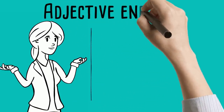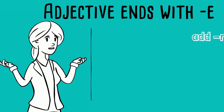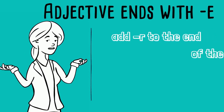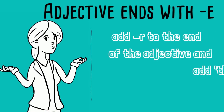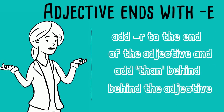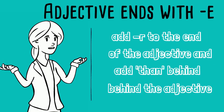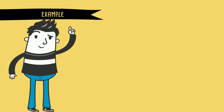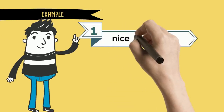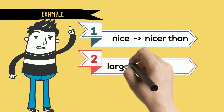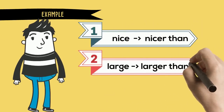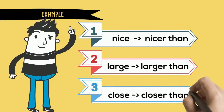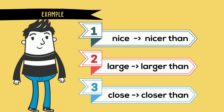Rule number two: for adjectives ending with 'e', we add 'r' to the end of the adjective and add 'than' behind the adjective. For example: nice → nicer than, large → larger than, close → closer than.